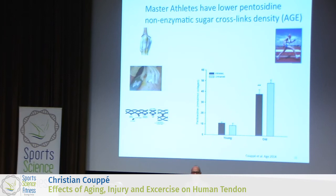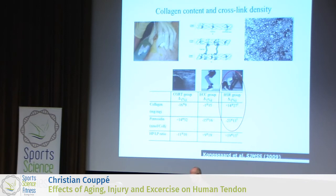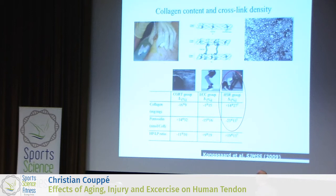The question is: do we really need lifelong training? I showed some data on the patellar tendon from the jumper's knee study by Max Kongsgaard from 2009, suggesting something can be done on a short-term level. He demonstrated that heavy slow resistance training could increase collagen content while also reducing the amount of sugar crosslinks by around 23%. So there is hope for getting the tendon younger — you don't necessarily need to run your whole life to rejuvenate the tissue.